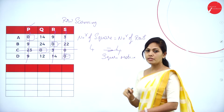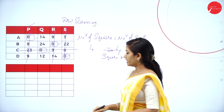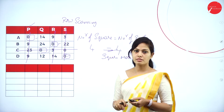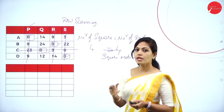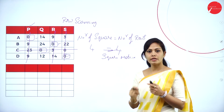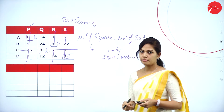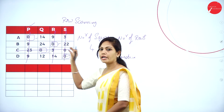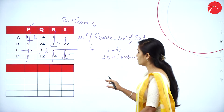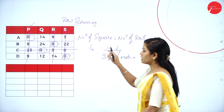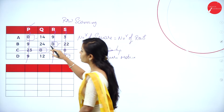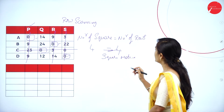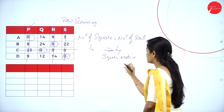After row scanning and column scanning, if it forms a square matrix, then you can find the assignments and assign the right operator. Since the number of assigned zeros equals the number of rows — both are 4 — we can proceed to find the assignment.